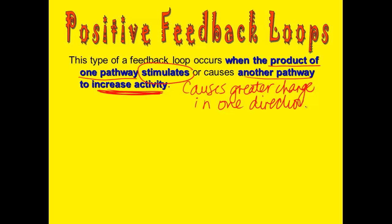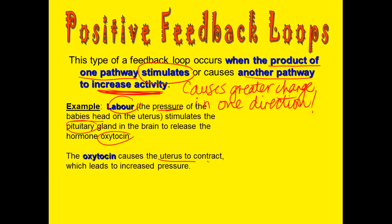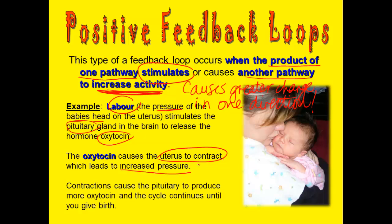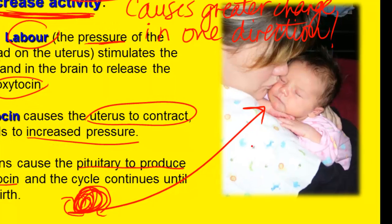A great example is labor. When you're in labor, the baby's head drops and starts pressing on your uterus. That pressure stimulates the pituitary gland to release a hormone called oxytocin. Oxytocin causes the uterus to contract, which makes more pressure. More pressure causes the pituitary gland to make more oxytocin — and this cycle continues: more oxytocin, more pressure, more pressure, more oxytocin, until eventually you get a baby.